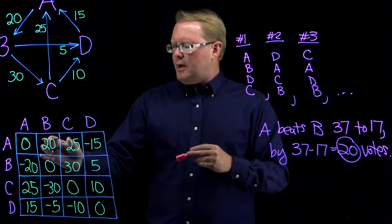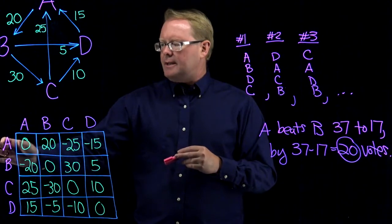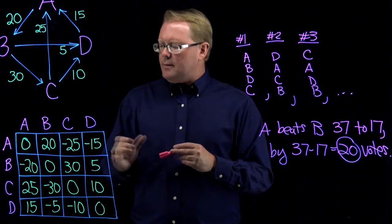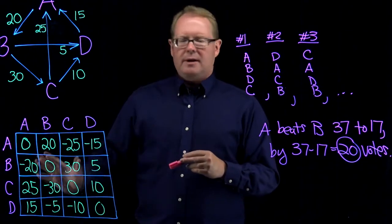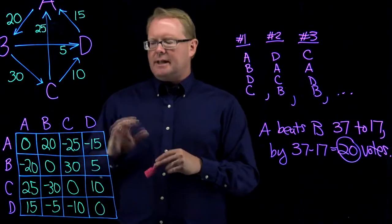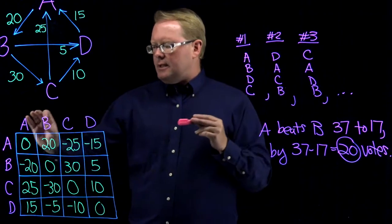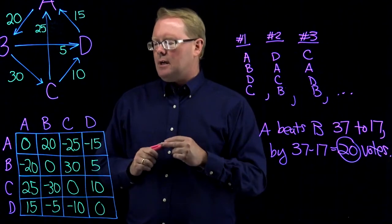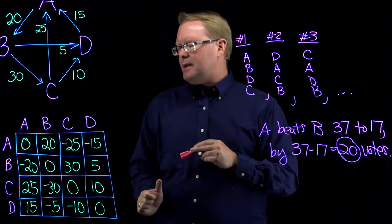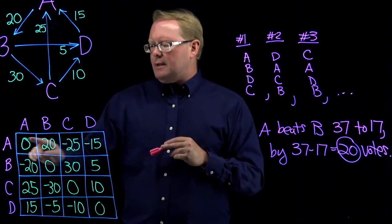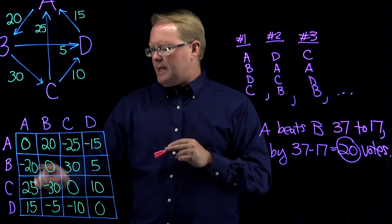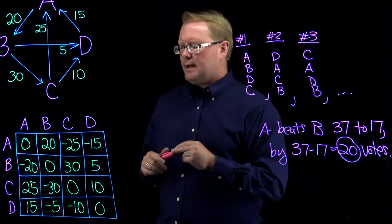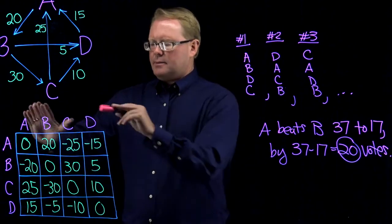The key number is the 20 — it represents the number of people that preferred A over B minus the number that preferred B over A. We put that number in the margin of victory matrix. This says A beats B by 20 votes. The matrix has all pairwise matchups; if A versus C were the only matchup, A beats C by negative 25 votes, meaning C beats A by 25 votes. This matrix is anti-symmetric and contains all pairwise information.